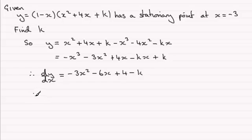When the gradient, that's given by dy/dx, equals 0 (because we're talking about a stationary point), we know that x = -3. So if I substitute that into this equation,